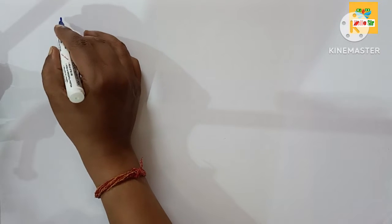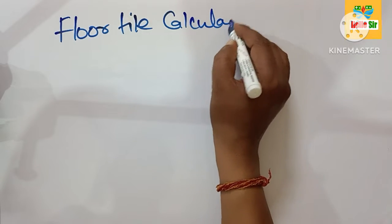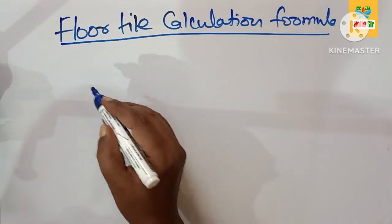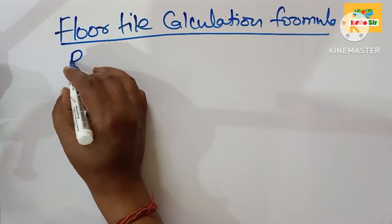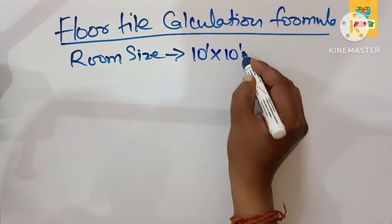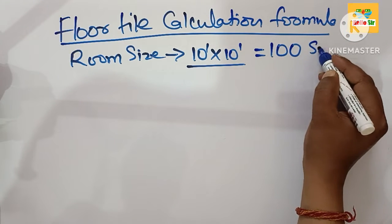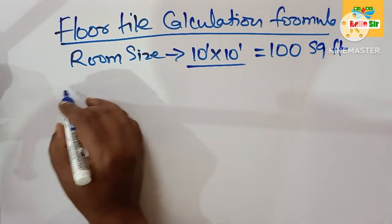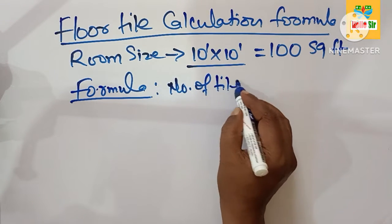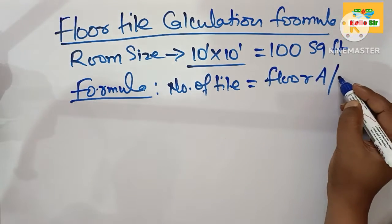In this video, we learn about the Floor Tile Calculation Formula. You can find the number of tiles required for flooring. Suppose you have a room size that is 10 feet by 10 feet. You multiply both dimensions — this gives 100 square feet of flooring area. Here is the formula to calculate the number of tiles: floor area divided by one tile area.